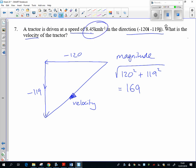So what we want to figure out is how many times smaller or how many times slower is the tractor actually traveling. So if we do 169 divided by 8.45,